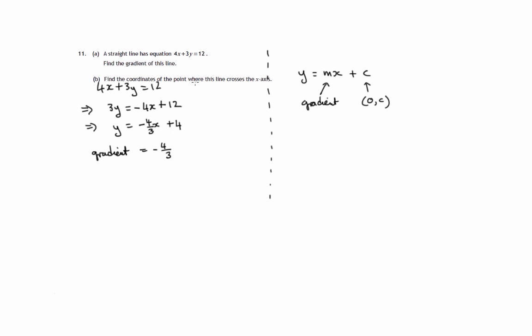And this says find the coordinates of the point where this line crosses the x-axis. So just a reminder that the x-axis, all points along the x-axis, have y-coordinate equal to 0. So if we look at the equation of the line 4x plus 3y equals 12, and we're looking for the x-axis intercept, as it's called, then the strategy is to set y equal to 0.